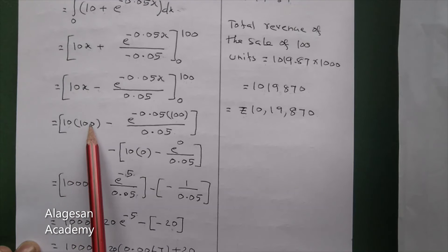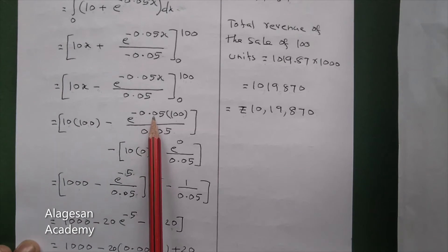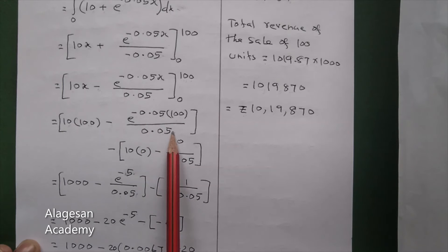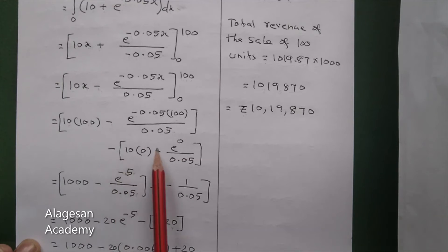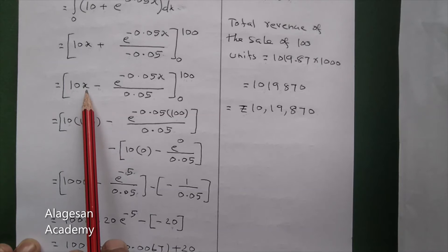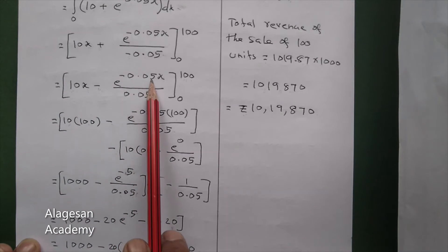Apply the upper limit, then minus the lower limit. Lower limit: 10 into 0 minus e power minus 0.05 into 0, which is e power 0 divided by 0.05.